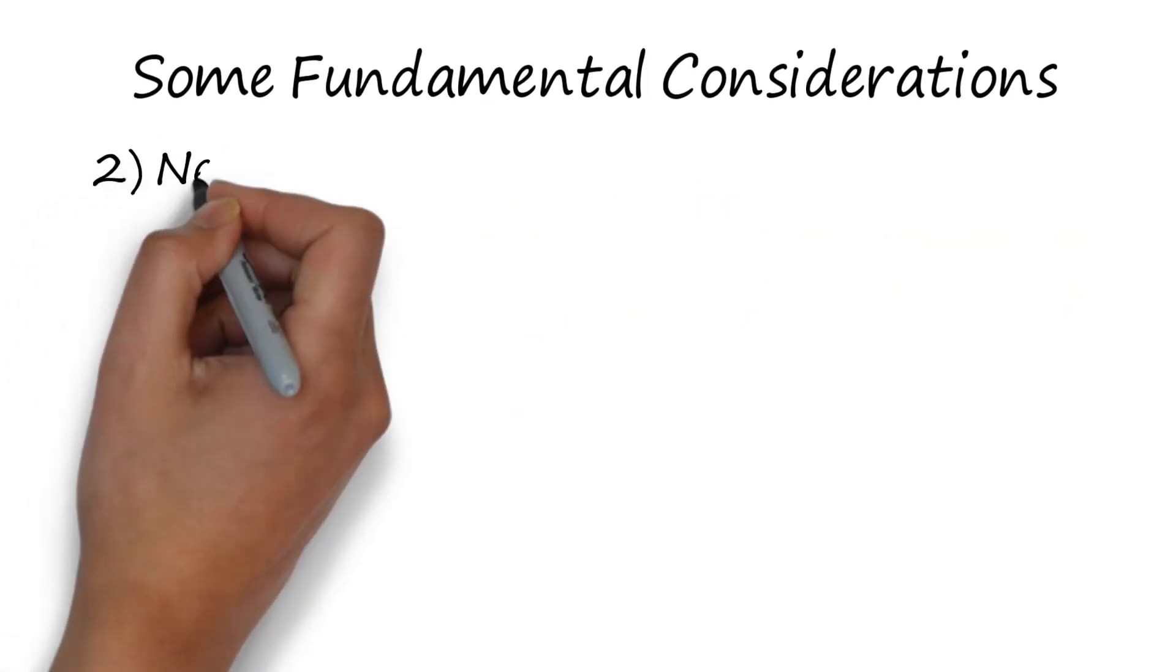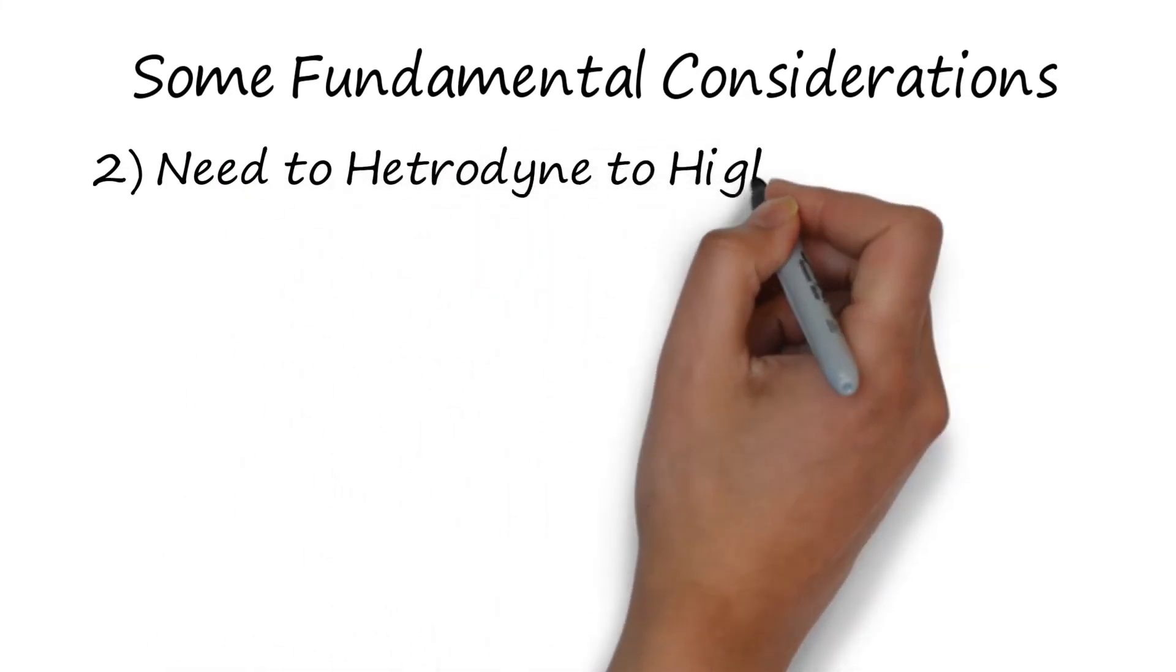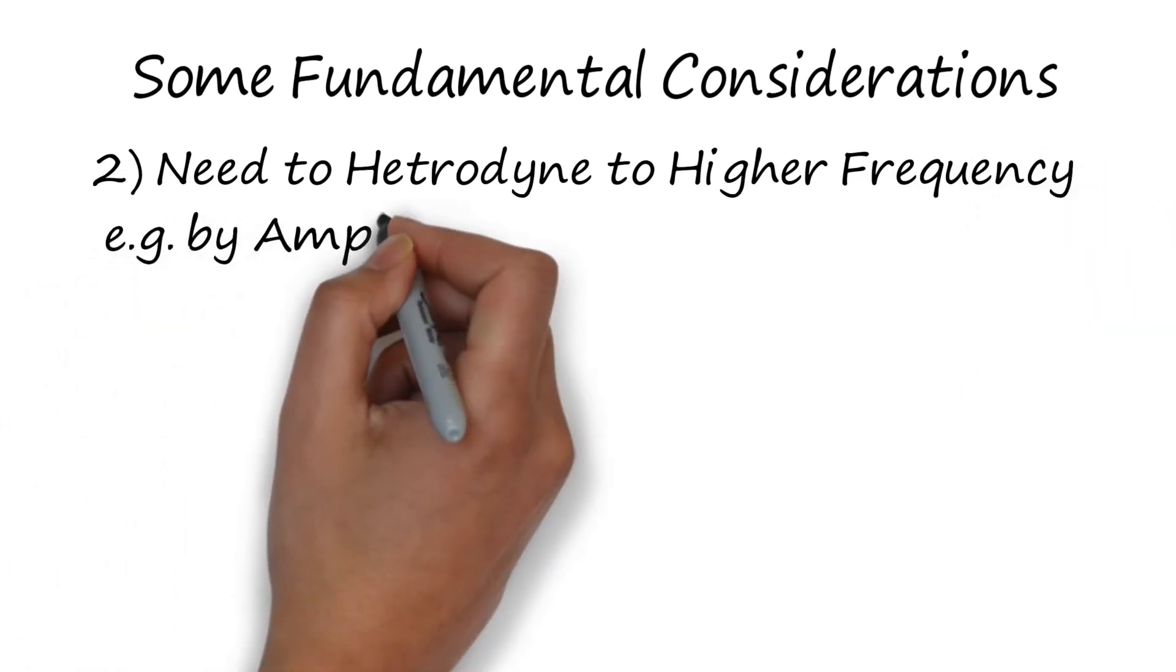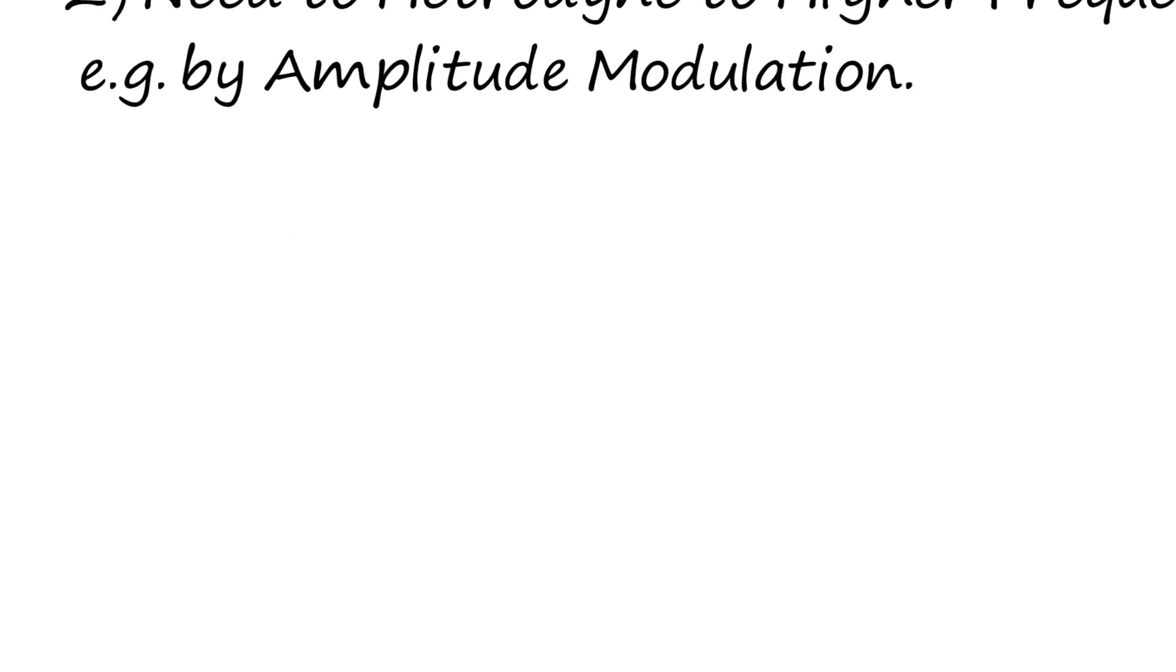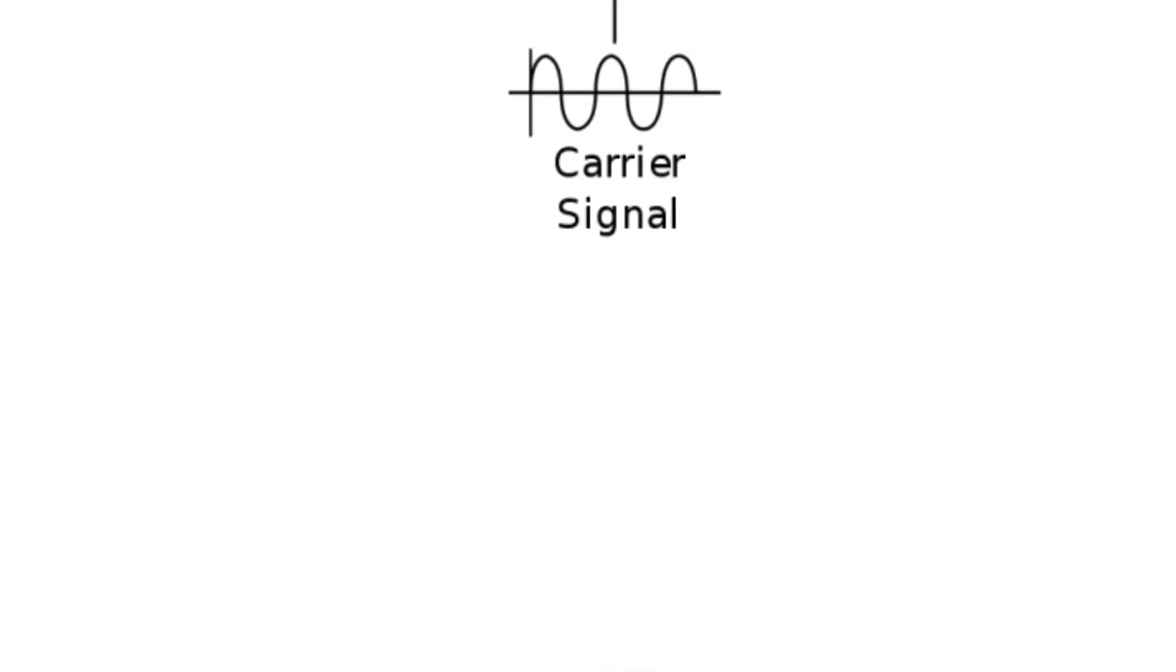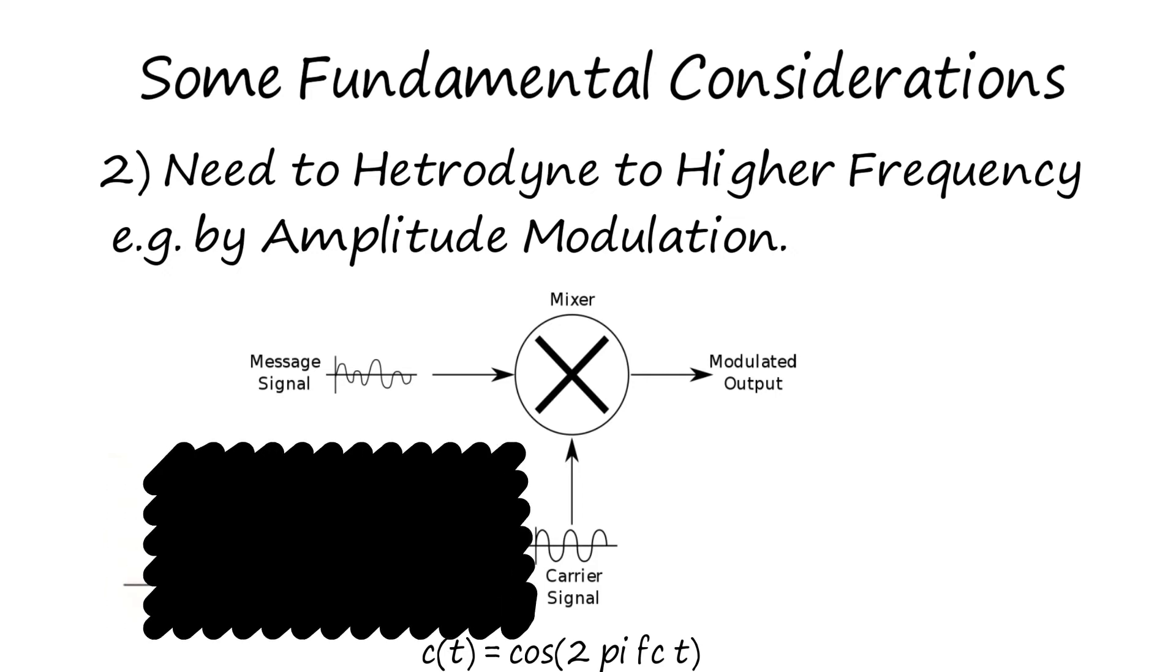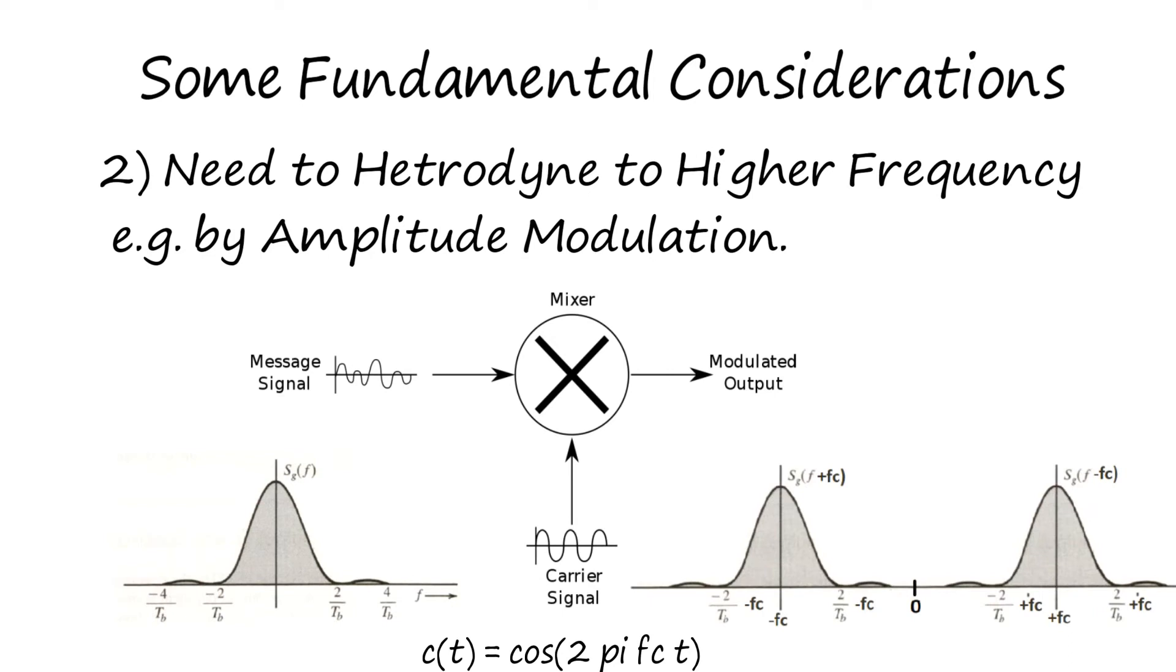Also, we have considered baseband which is not practical as the antenna size and channel conditions are not favorable. To counter this, we use a modulator where we use a high frequency signal c(t) and then multiply this c(t) with the incoming data stream g(t). This would shift the spectrum to a higher frequency centered around ±fc, that is the carrier frequency.